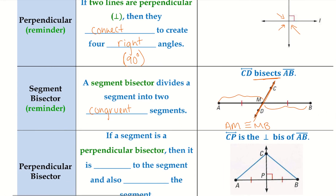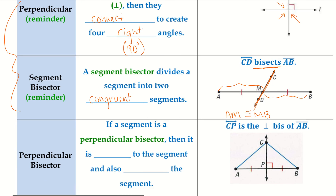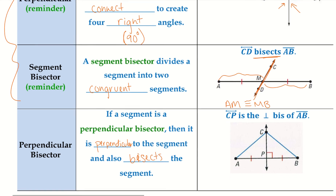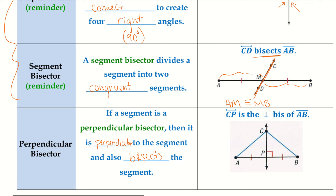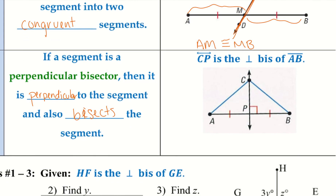Now if we take both of these definitions — perpendicular and segment bisector — we can get a perpendicular bisector. If a segment is a perpendicular bisector, then it is perpendicular to the segment and also bisects the segment. So CP is the perpendicular bisector of AB: we have 90-degree angles created and two congruent smaller segments from the larger segment.